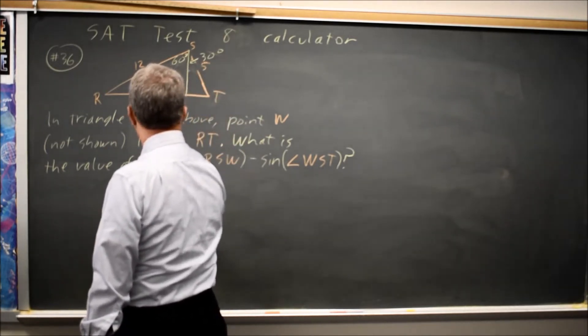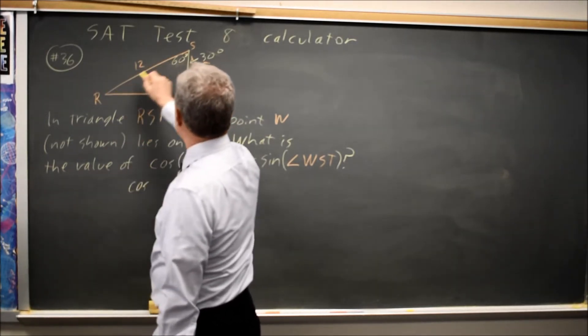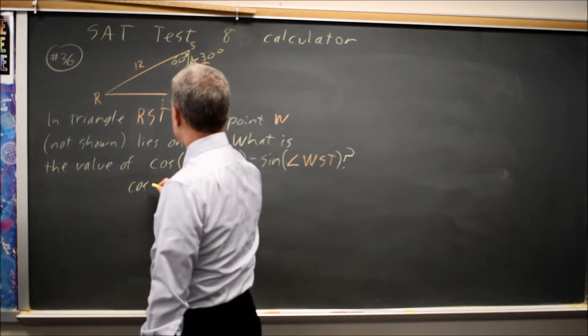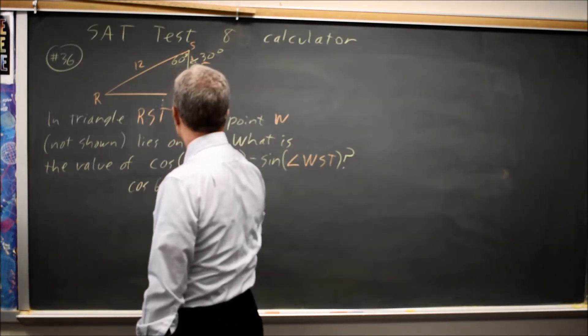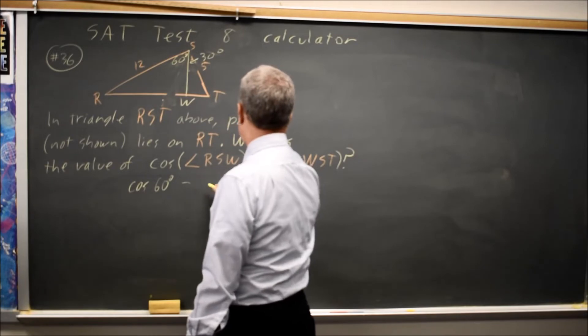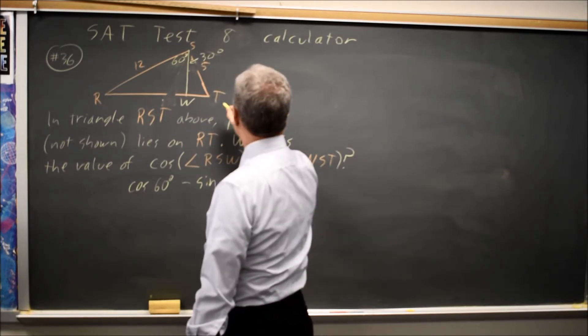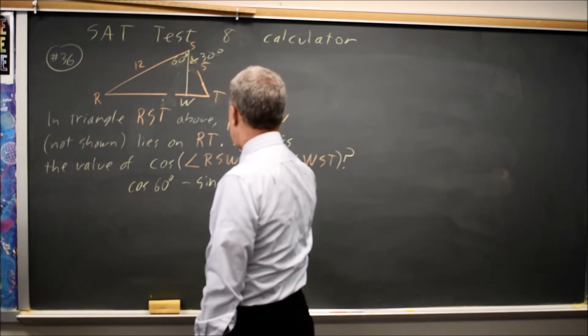Cosine of angle RSW is cosine of 60 degrees, and sine of angle WST is sine of 30 degrees.